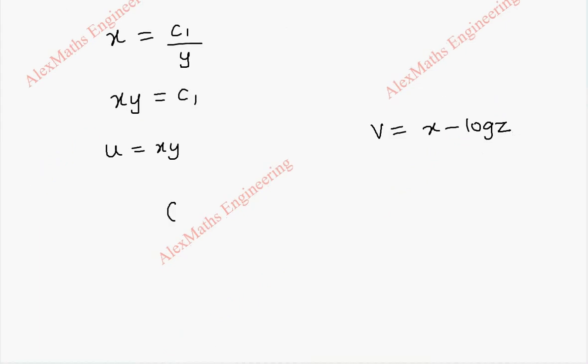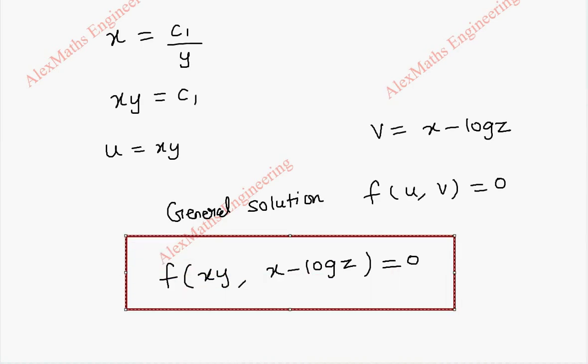Now, using this, we can give the general solution. And, it is in the form of f of u comma v equal to 0. So, f of xy comma x minus log z equal to 0. Thus, we got the solution using the Lagrange's method.